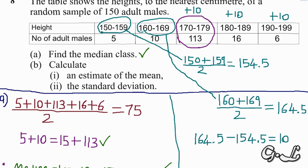Continuing, 174.5 plus 10 gives us 184.5, and 184.5 plus 10 gives us 194.5. That is how we find all midpoints efficiently.